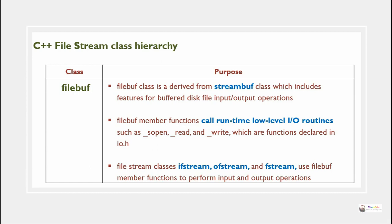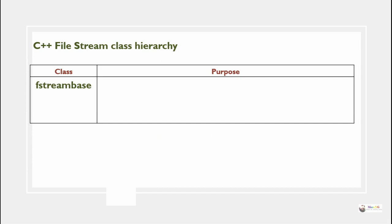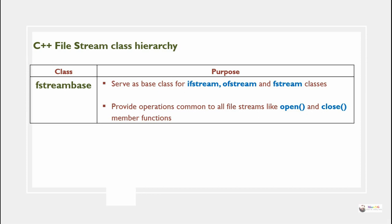The FileStream classes ifstream, ofstream, and fstream use filebuf member functions to perform input and output operations. fstreambase serves as the base class for ifstream, ofstream, and fstream classes, and provides operations common to all file streams such as the open and close member functions.